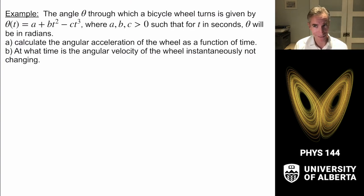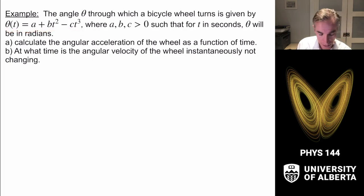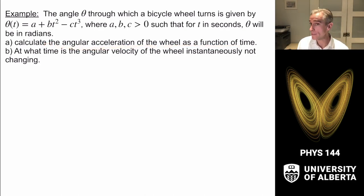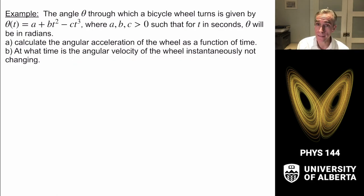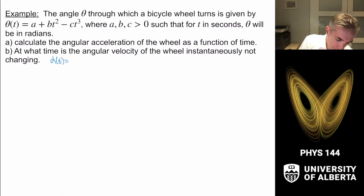Let's bring in some calculus. The angle through which a bicycle wheel turns is given by theta of t equals a plus bt squared minus ct cubed, where a, b, and c are positive constants, t is in seconds, and theta is in radians. Calculate the angular acceleration as a function of time, and at what time is the angular velocity instantaneously not changing? The second part means we need to find when alpha of t equals zero.